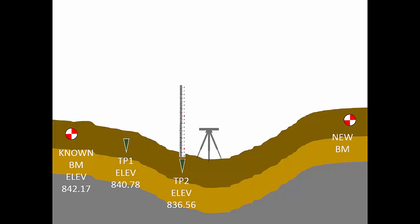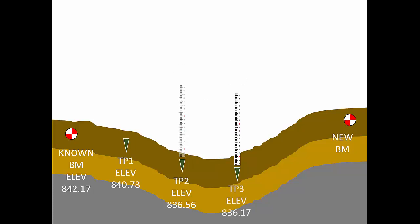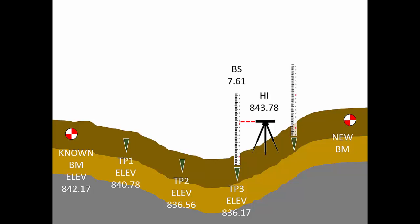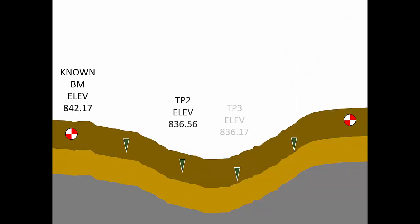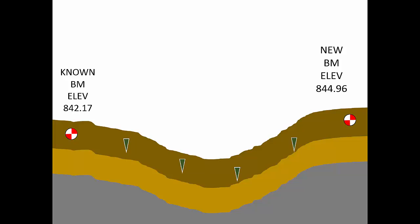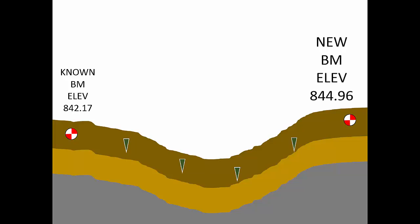The process then simply repeats. At each new instrument setup, there will be a new back sight reading and a new HI. The operator will take two readings — a back sight and a foresight. At each turning point, the rod person holds the rod for two readings: first a foresight, then a back sight. In the field, the rod person and instrument operator move separately, taking turns and moving forward in a leapfrog pattern. With the final foresight, there are enough measurements to compute the elevation of the new benchmark. The process is fairly simple, repetitive, and efficient.